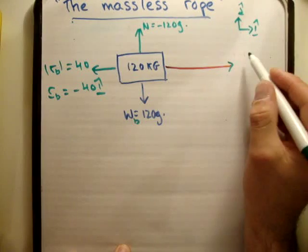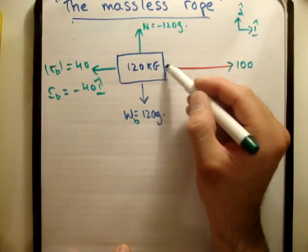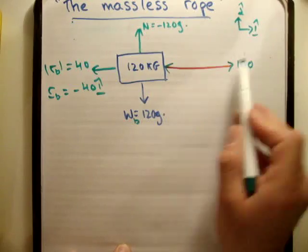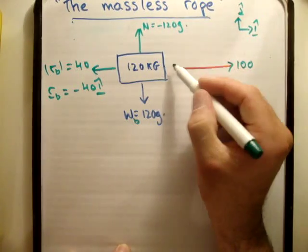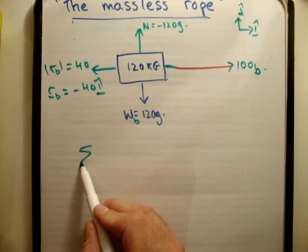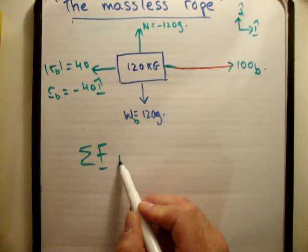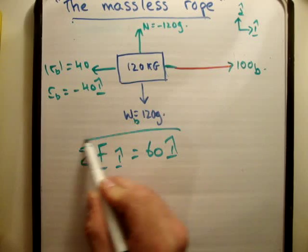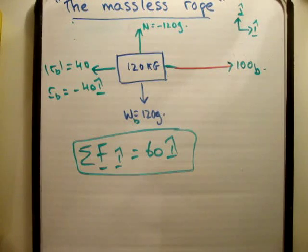To finish off, the overall effect is that the man applies 100 newtons here and there are 100 newtons on the boat. The sum of the forces in the i-hat direction will equal 60 i-hat. If there are any questions, please pass them on to me. Hope you enjoyed watching. Please pass it on to your friends and subscribe to my channel.